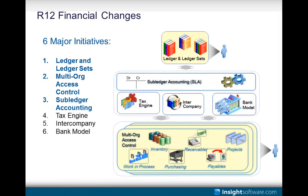Those are the three big financial changes in Release 12. Three others: the tax engine. In the past in 11i you would set up tax rules in each subledger, but in Release 12 there is a new module called the e-business tax engine with a centralized way of setting up tax rules. When people were first upgrading to Release 12, this was an area that caused some heartache. It's important to have someone in your organization or consultants that really understand the business side of tax.